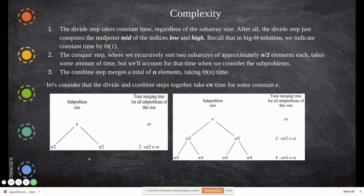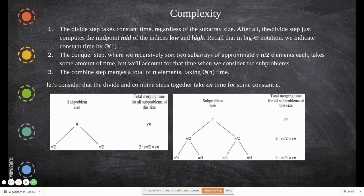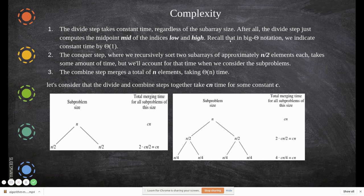Now you take the constant c. C is a constant where c is a—here the divide step takes constant time. We have made a value c. C can take any value regardless of the subarray size. After all, the divide step just computes the midpoint mid of the indices low and high.